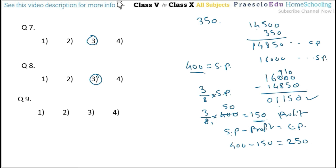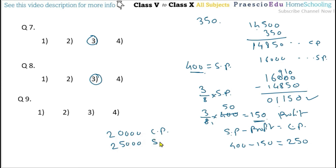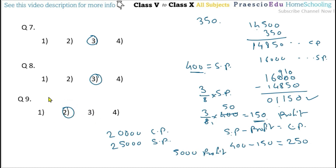Question number 9: John purchased a motorcycle for rupees 20,000 and sold it for rupees 25,000. Since SP is greater than CP, there is a profit. Profit equals 25,000 minus 20,000 equals rupees 5,000. This profit of rupees 5,000 is given in option number 2. Thank you.